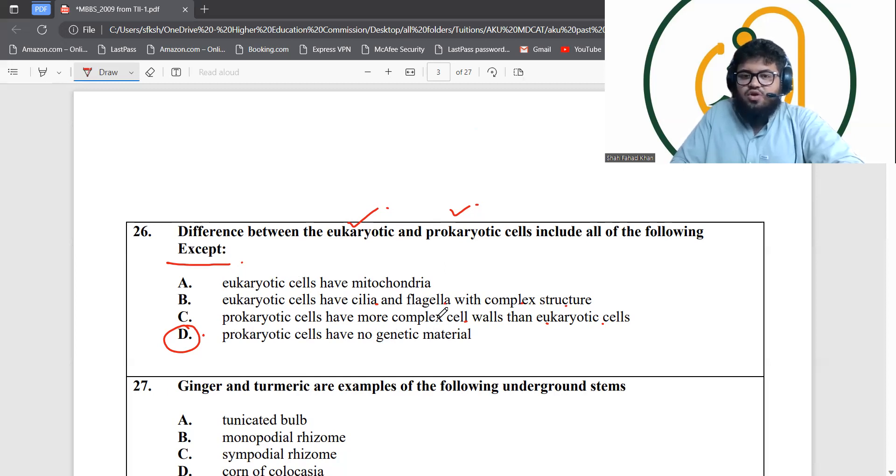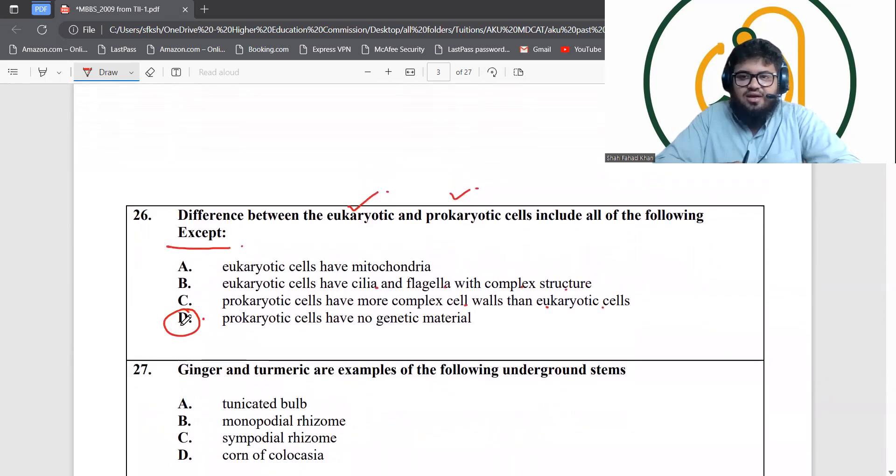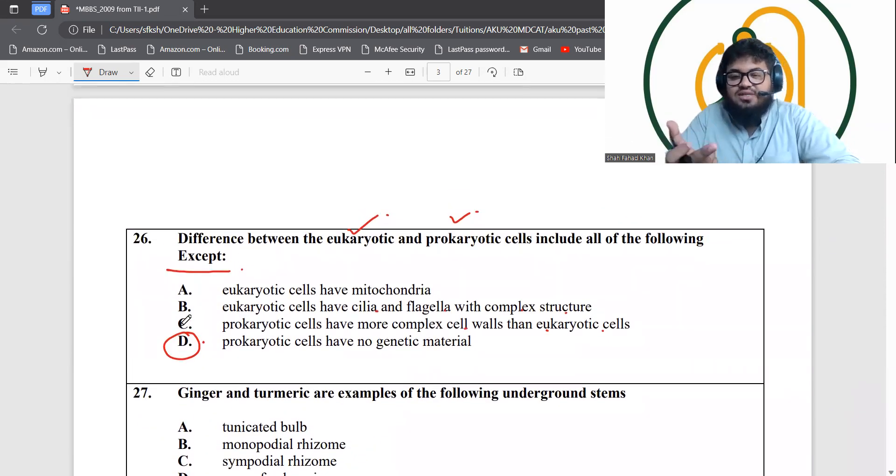All of these three are the key differences between them. Eukaryotic cells do have mitochondria, prokaryotes don't. Eukaryotic cells do have these, prokaryotes don't. It's only this last option that is wrong because prokaryotic cells do have genetic material. Remember the open genetic material, the open DNA, the nucleoid? That's the one I'm talking about. It's the incorrect answer which they are asking us. This is a tricky question. Make sure to read the question carefully before answering it.